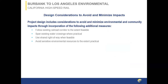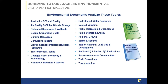We work closely with the project engineering team to first identify critical resources within the community and the natural environment, looking for ways to avoid impacting those resources. But in a very constrained urban environment, it's very hard to avoid all impacts, so we look for opportunities to minimize them — perhaps a retaining wall to avoid encroachment onto a property or sensitive area. Where we do have impacts, we have different strategies to mitigate those impacts where we can't avoid or minimize them.